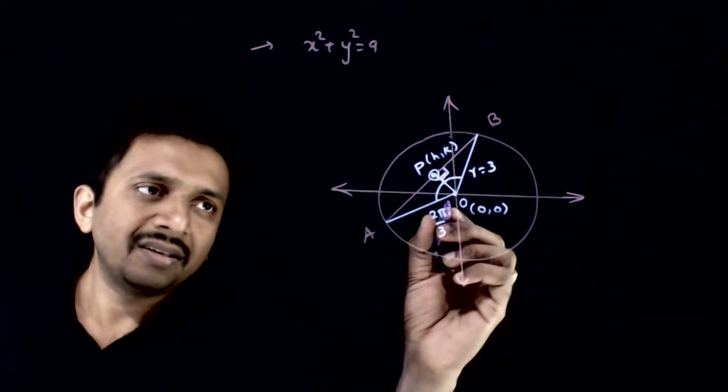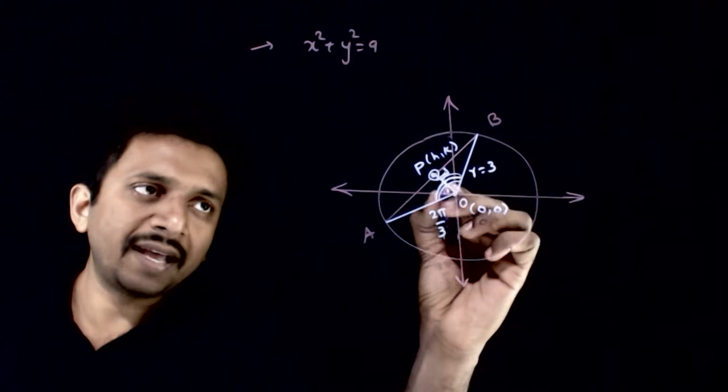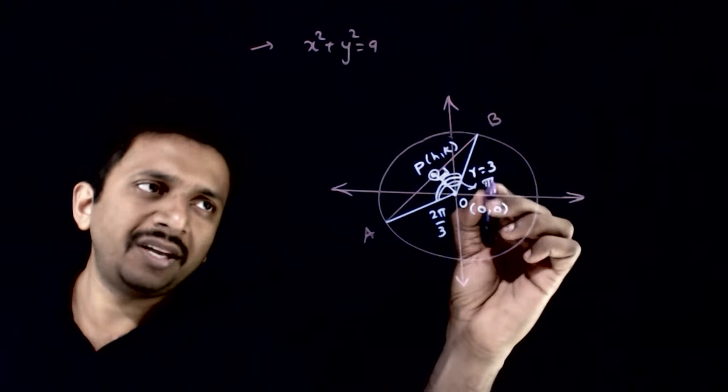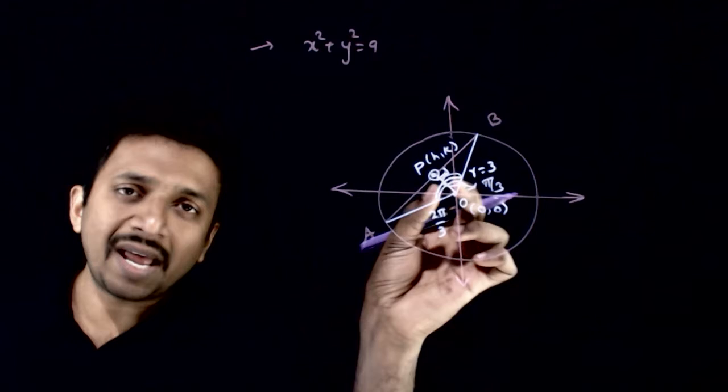Now in this triangle, the total angle is 2π by 3. So this angle will be equal to π by 3. So in this triangle,